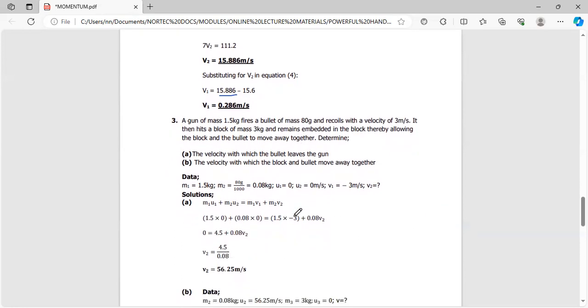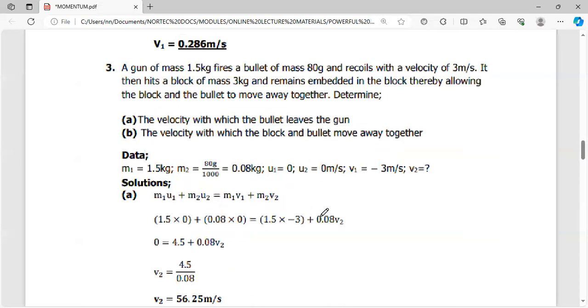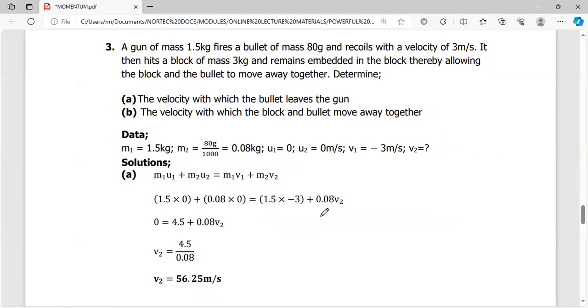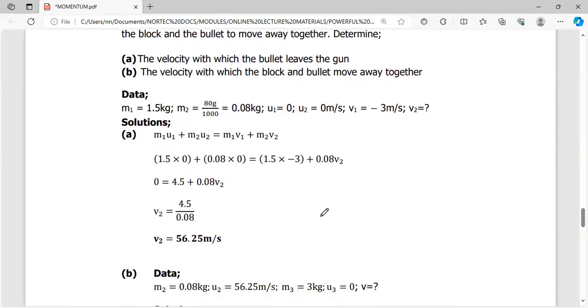Finally, we have a gun whose mass is 1.5 kg that releases a bullet of 80 grams. The gun recoils at 3 m/s. The bullet hits into a block of mass 3 kg and remains embedded in the block, allowing the block and bullet to move away together. Determine the velocity with which the bullet leaves the gun, and the velocity with which the block and bullet move away together.